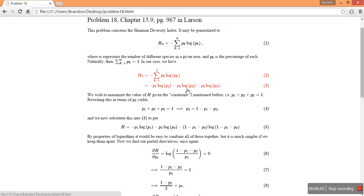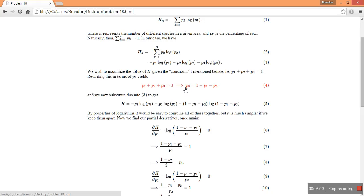And now we want to maximize our diversity index. So what values of p could possibly maximize the diversity index that we get for a given area? And so from our constraint above, we know that the sum of all of these percentages has to equal one.